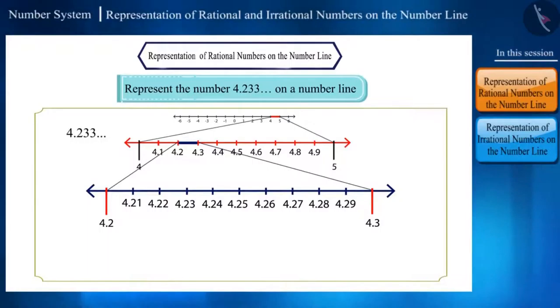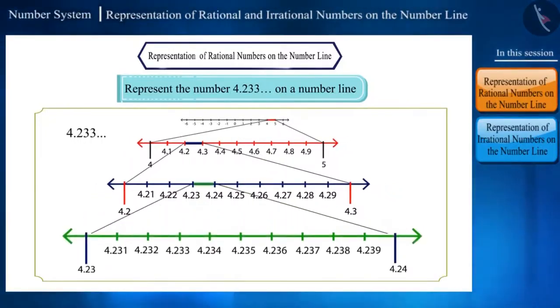Now we can say that the given number will lie between the numbers 4.23 and 4.24. Friends, to get more accurate visualization of the representation, we will further divide the range 4.23 and 4.24 into 10 equal parts. So the given number lies between 4.233 and 4.234.